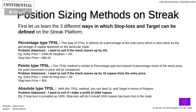The second method is point type TPSL. Problem statement: I want to exit if the stock moves up by 10 rupees from the entry price. Similarly for stop-loss: if entry price is 1,000 rupees and stop-loss is 50 points, then stop-loss level is 950 rupees. If the stock hits 950, the stop-loss is triggered.